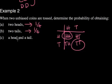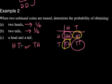But here it says a head and a tail. It doesn't mean head first and then tail second. It means it could be this one, or it could be this one. And because there are two different ways that you could choose from here, you could have this one, or you could have that one, then the probability for part C is actually two out of four.